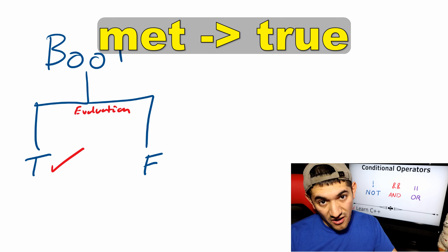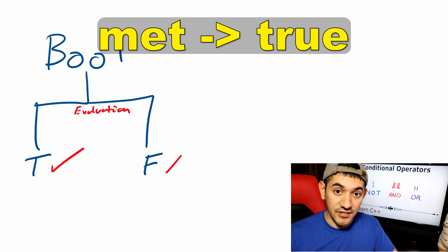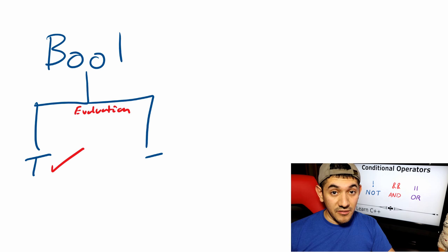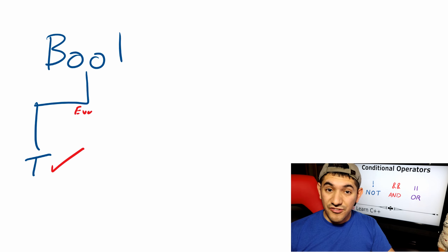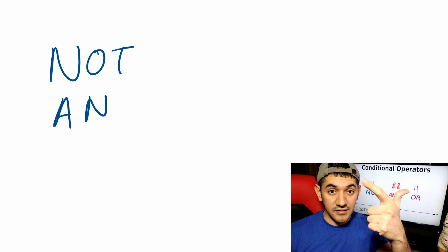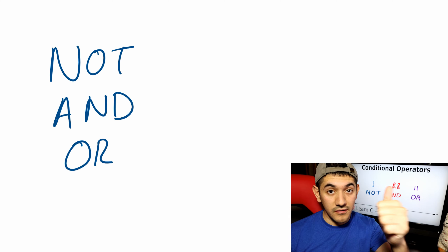When a condition comes out to be true, we say that the condition has been met. And when the condition is false, we say that the condition has not been met. With that in mind, there are three conditional operators: not, and, or.